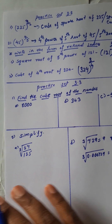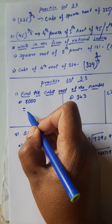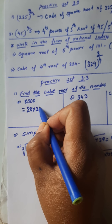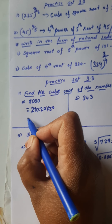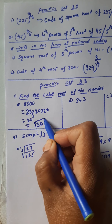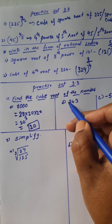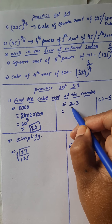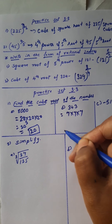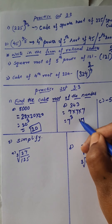Practice set number 3.3 — find the cube root of the number. Question: 8000. The number 8 is the cube of 2, and there are three zeros, so 20 multiplied by 20 multiplied by 20 equals 8000. Therefore, the cube root of 8000 is 20. Next, 343 — which number's cube is 343? It is 7, because 7 multiplied by 7 multiplied by 7 equals 343. So the cube root of 343 is 7.